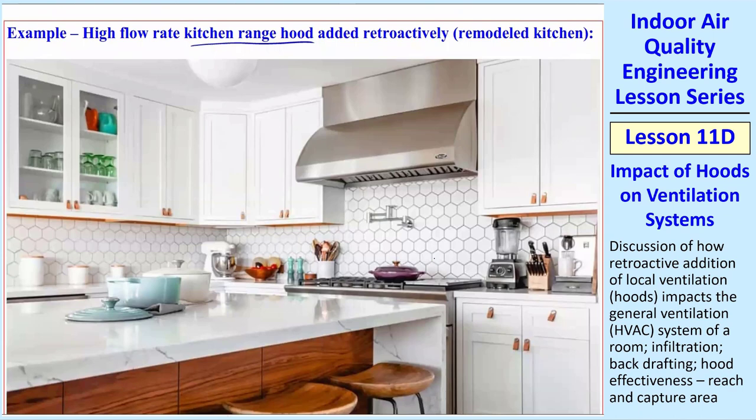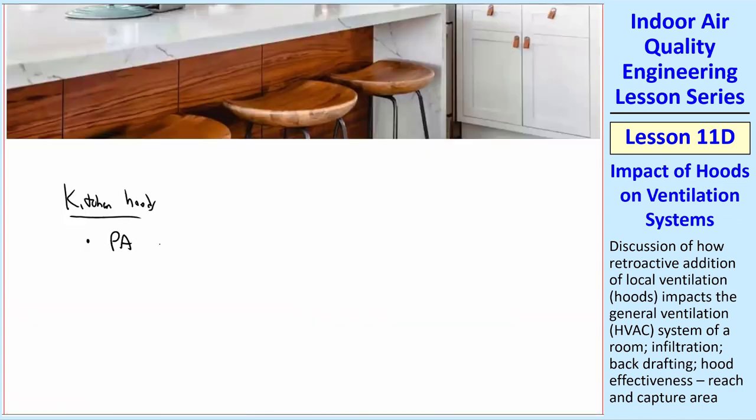In fact, for kitchen hoods, there are rules. It turns out that in PA, Pennsylvania, the max flow rate for a kitchen hood is 400 CFM, and I've seen some other states have different limits, like 600.